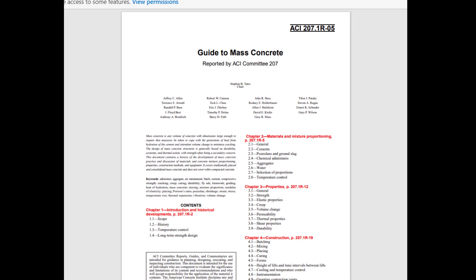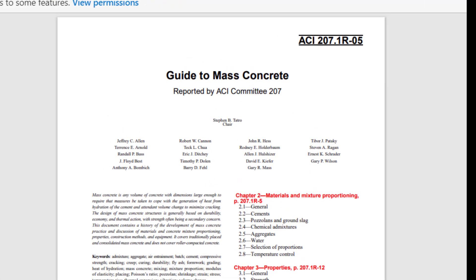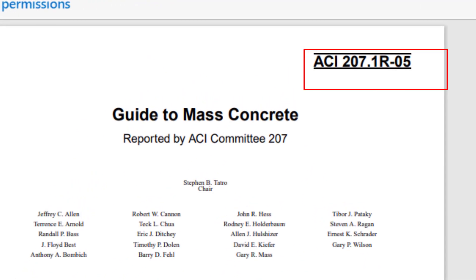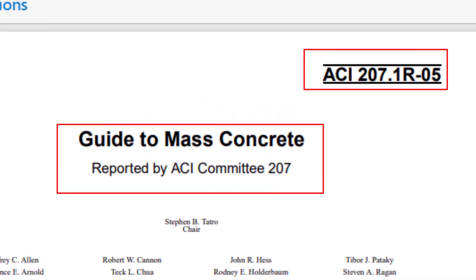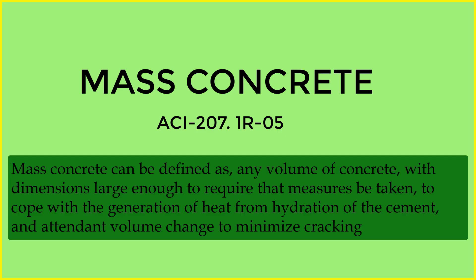A.C.I. Code number 207.1R-05, Guide to Mass Concrete. Mass concrete can be defined as any volume of concrete with dimensions large enough to require that measures be taken to cope with the generation of heat from hydration of the cement and attendant volume change to minimize cracking.